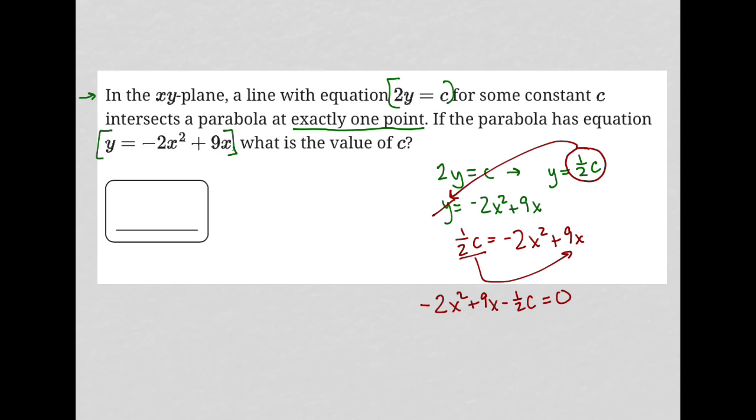What else do we know? We also know that again, there's more to be told about the exactly one point thing because this is a parabola. Technically there's a lot of places in which a line can intersect at more than one point. So the fact that it intersects in only one point also means that we only have one solution to this parabola, to this equation.